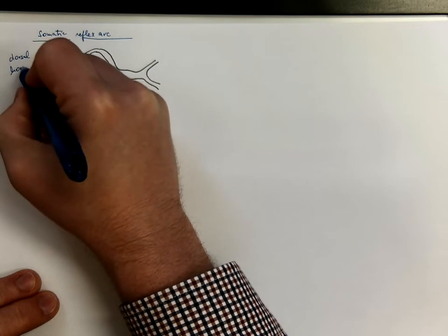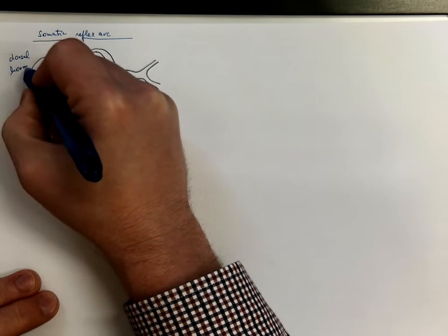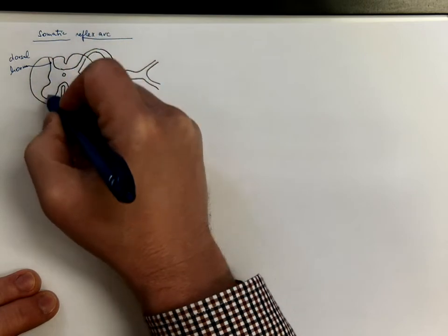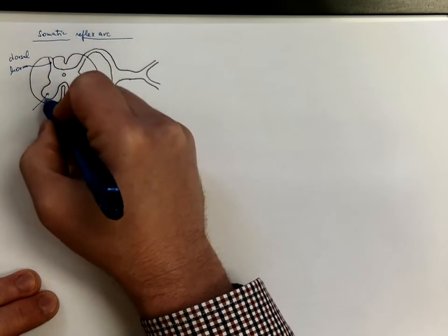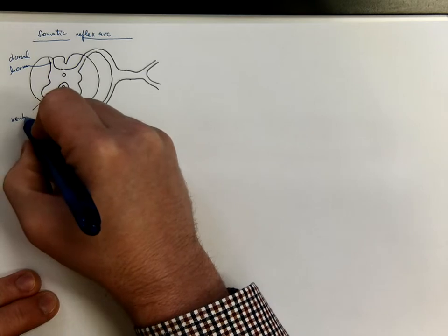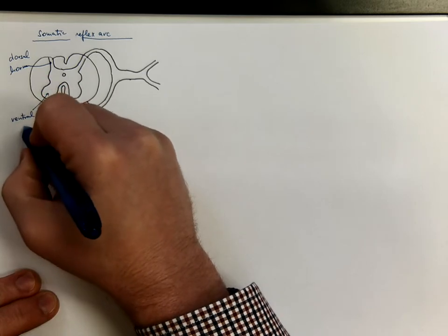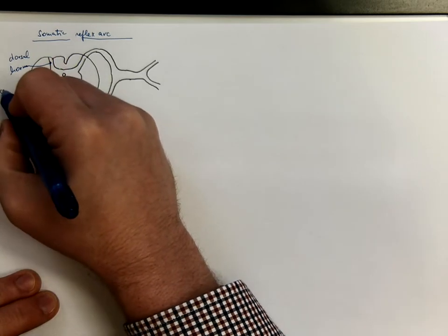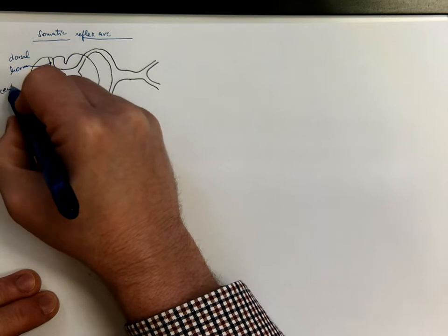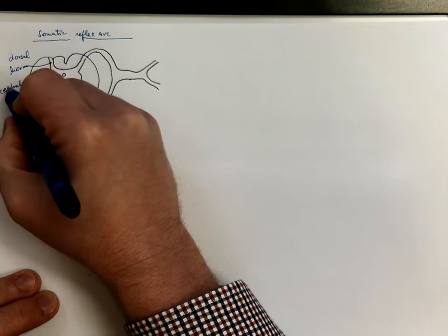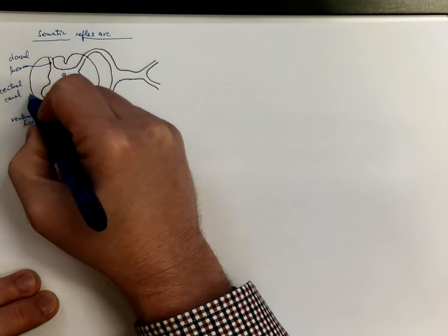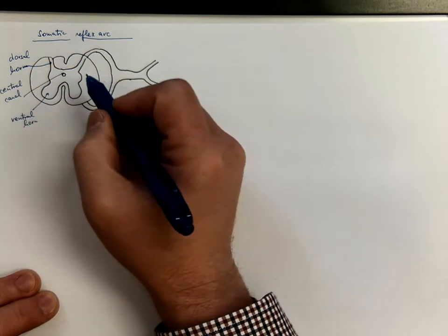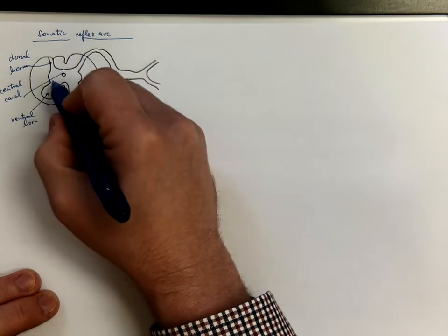So there are those horns. This is the ventral horn, central canal, and this is the grey matter.